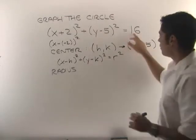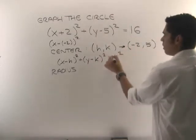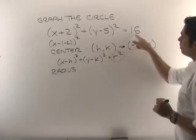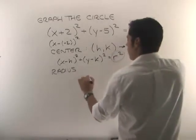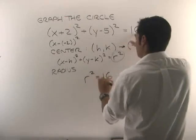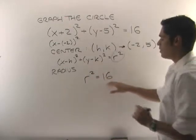Now to get our radius, we want to remember that in our formula, the number at the end here is our radius squared. So we know that our radius squared is equal to 16 and we can take the square root of both sides.